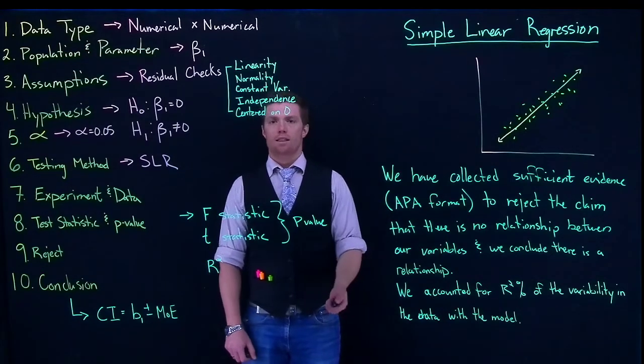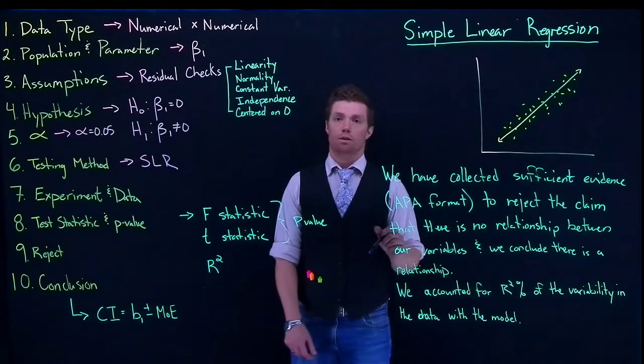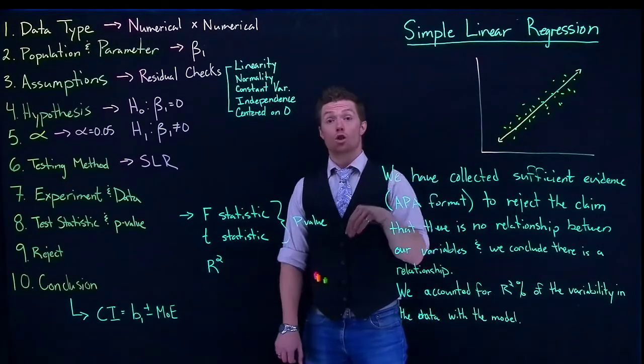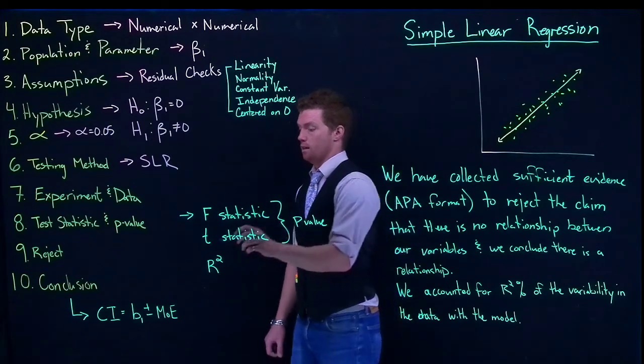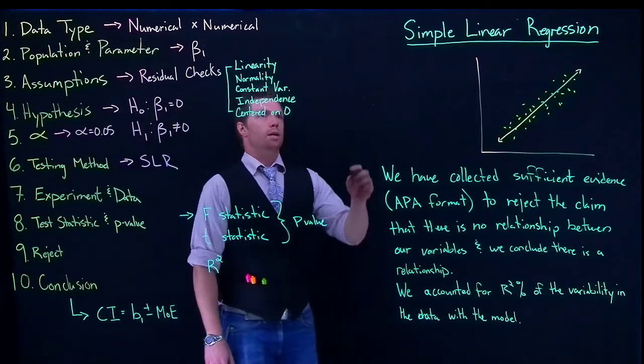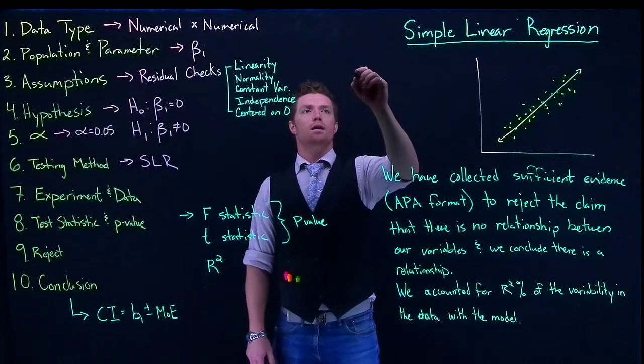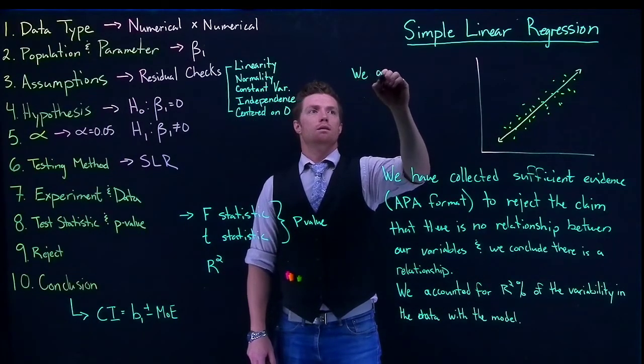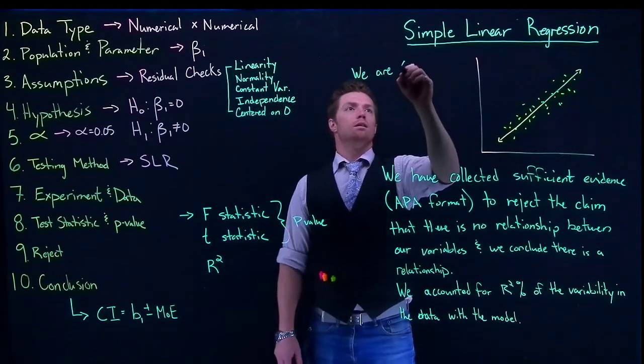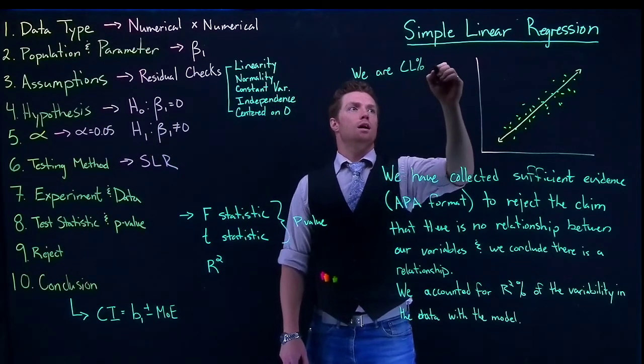And then we finally need a confidence interval. And we're going to kind of fold in the definition of our slope into this confidence interval, because that is exactly what this guy is. This is the slope. So we can say that we are, this would be, you know, our confidence level percent confident.